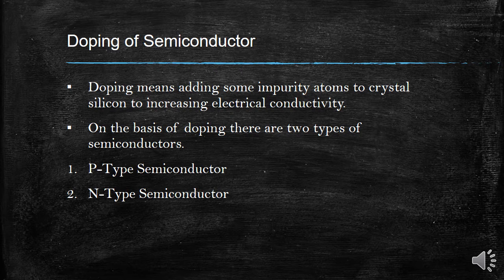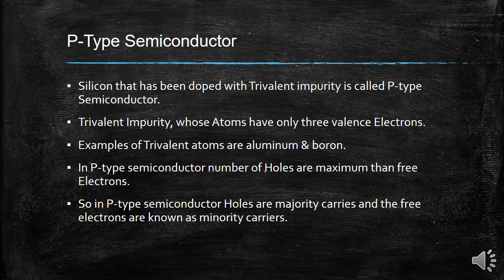On the basis of doping, there are two types of semiconductors. The first is P-type semiconductor and the second is N-type semiconductor. P-type semiconductors use trivalent impurities such as aluminum, which is used in the doping process.